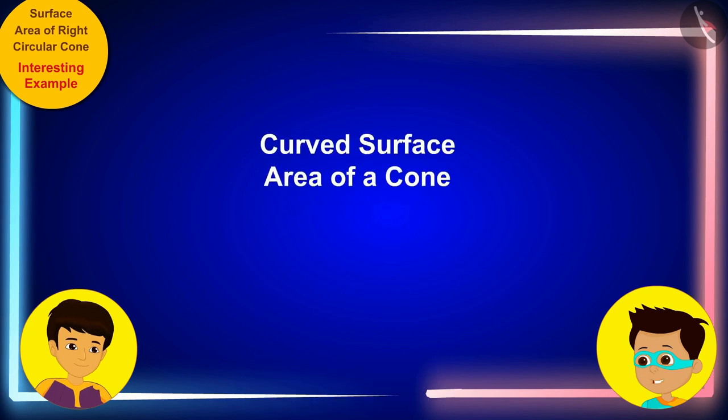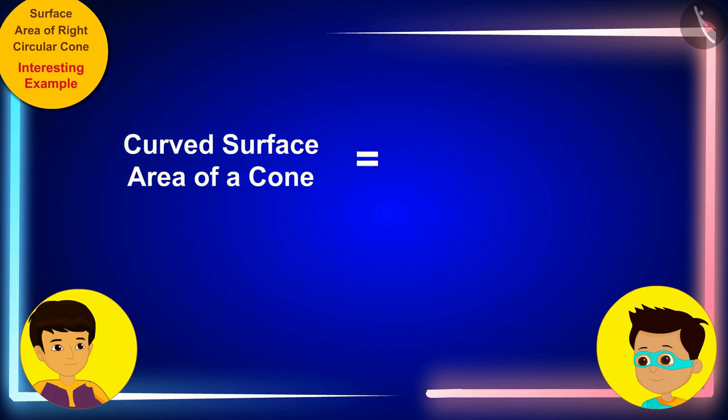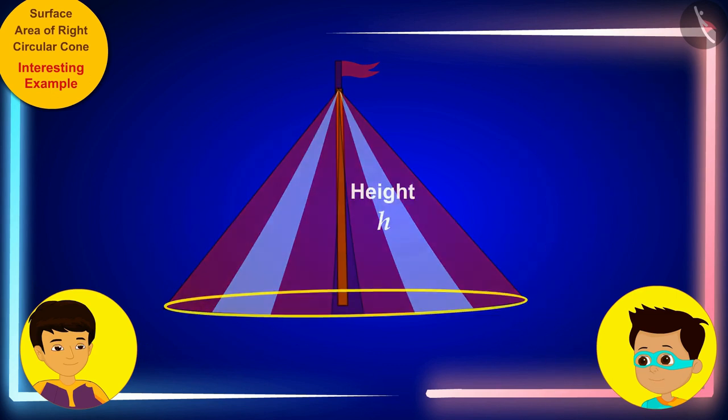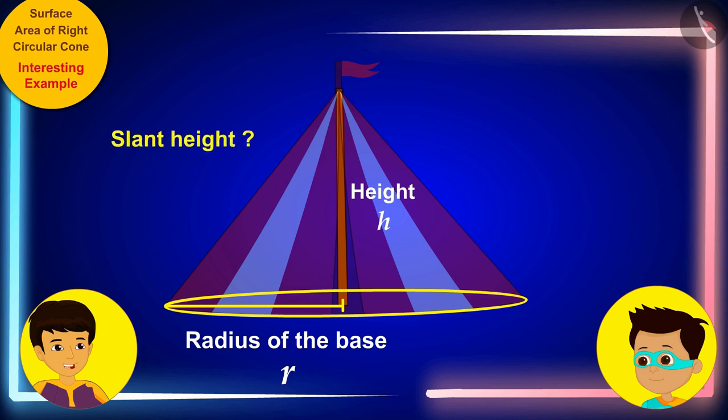Good, I remember the formula of the curved surface area of a cone. The curved surface area of a cone is equal to the product of pi, r, and l, where r and l are the radius of the base and the slant height of the cone respectively. We can find the radius of the base of the tent by measuring from the center of the floor of the tent till the boundary of the tent. But tell me Thomas, how do we find the slant height of the tent?